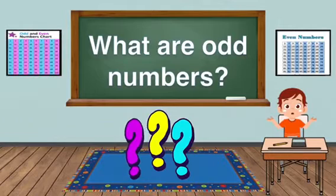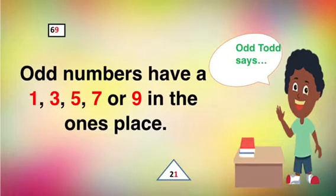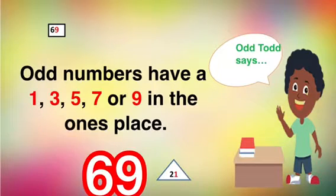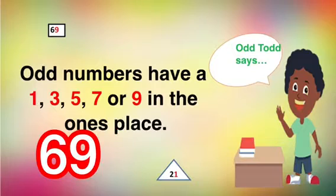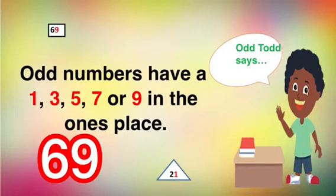What are odd numbers? Odd Todd says odd numbers have a 1, 3, 5, 7, or 9 in the ones place. In the number 69, 9 is in the ones place and 9 is an odd number. So 69 is an odd number.